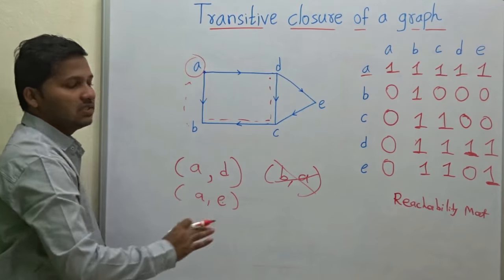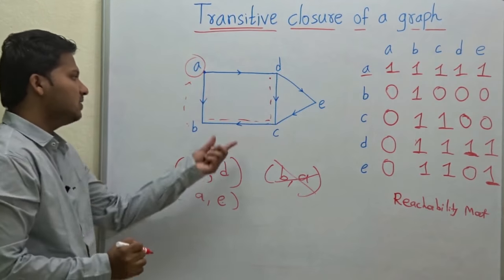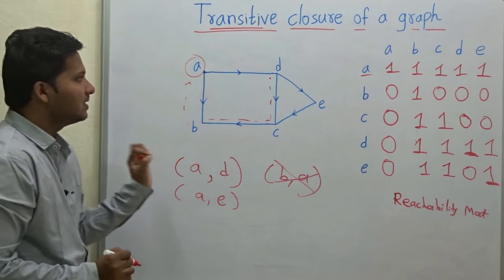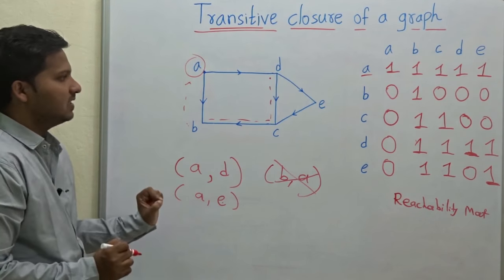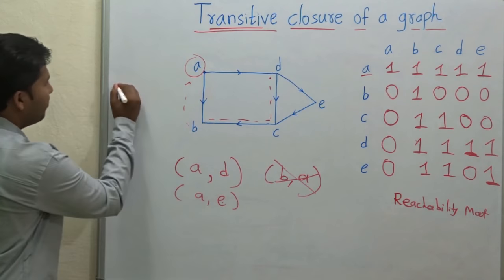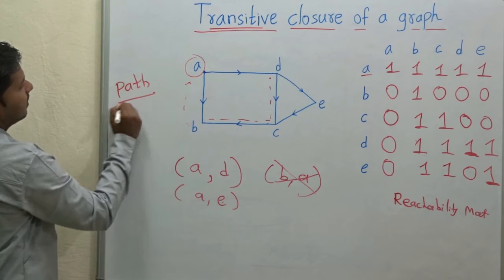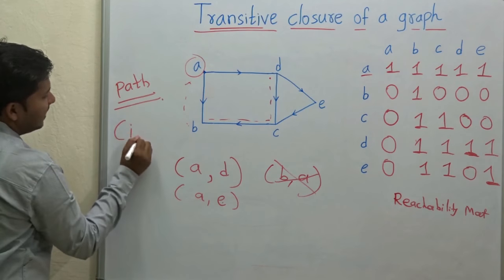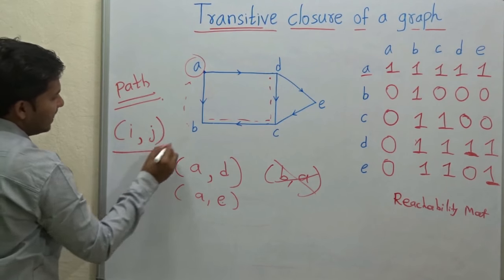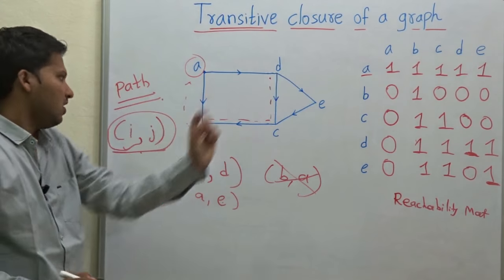And this matrix is called as the transitive closure of a graph. For this graph, this is the transitive closure. In short, that is the set of vertices which have a path in common — meaning there is a path from vertex I to J — then this set comes in the transitive closure of the graph.